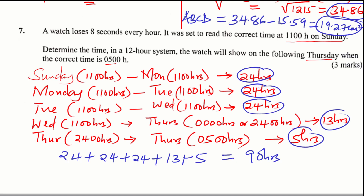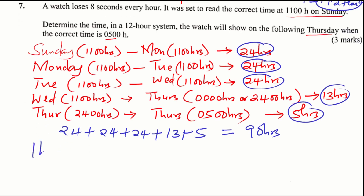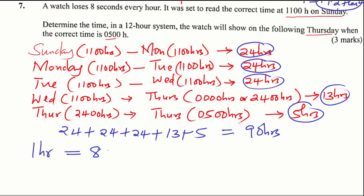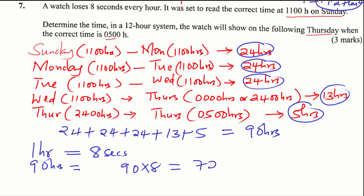Now, in the question, this watch loses 8 seconds every hour. So for 1 hour it loses 8 seconds. For 90 hours, it is going to lose 90 times 8, which equals 720 seconds.